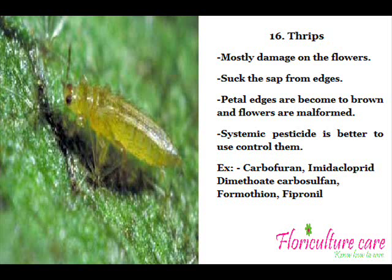Thrips mostly damage flowers, especially petal edges, by sucking sap from them. Therefore, petal edges become brown and flowers become malformed. Thrips have small furred wings and damage is high in dry seasons. A systemic pesticide is better to control them. Carbofuran, Imidacloprid, Carbosulfan, Formethan, and Fipronil are the most common pesticides to use.